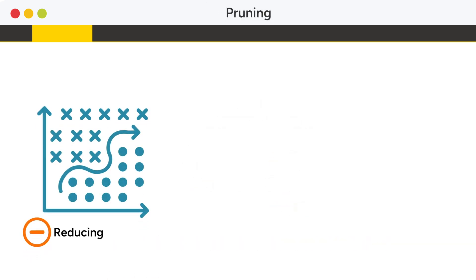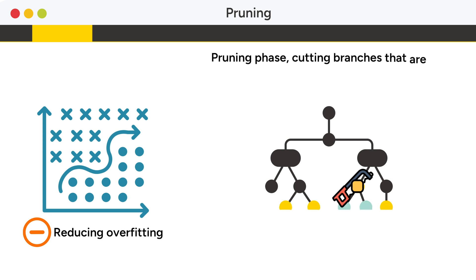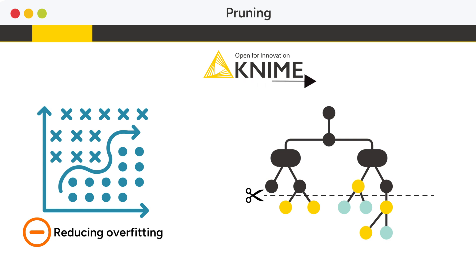To reduce overfitting, a tree growing phase is often followed by a pruning phase, cutting branches that are over-specialized on the training data. KNIME provides two pruning techniques: reduced error pruning and minimum description length pruning.